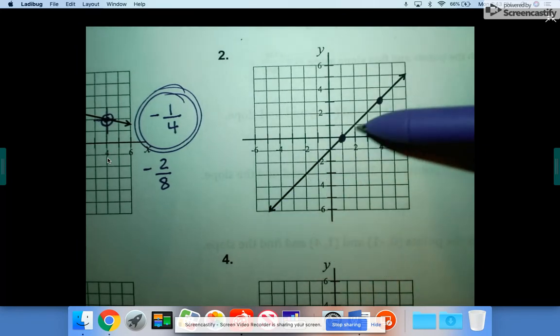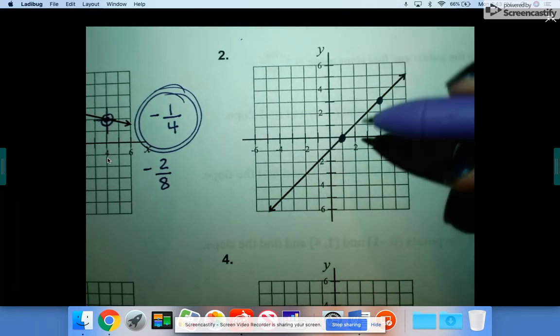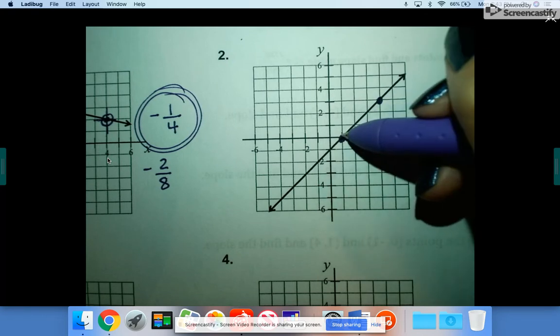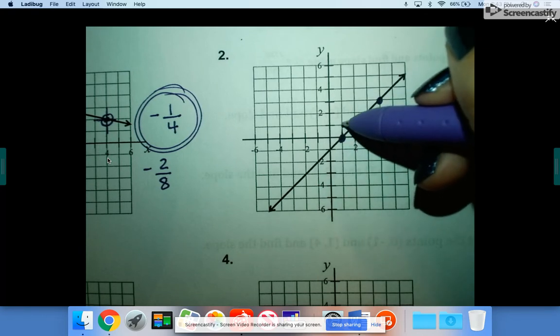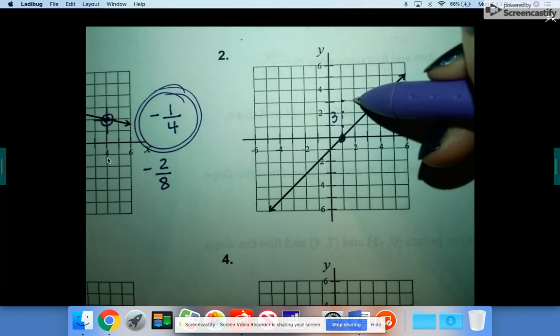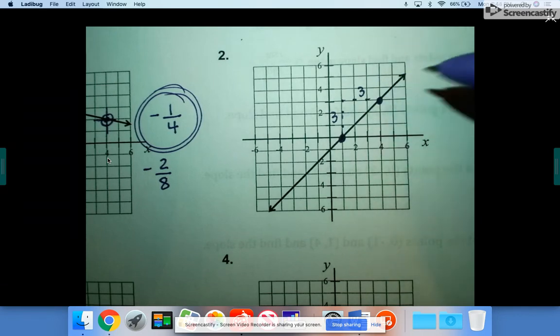It's going uphill from left to right, so it's positive. And the two points I picked, it rises one, two, three. And it runs one, two, three. Three over three.